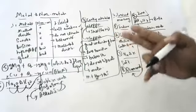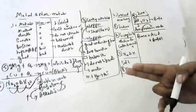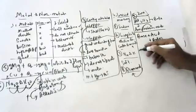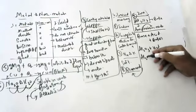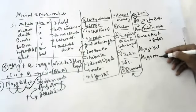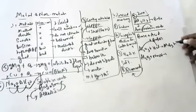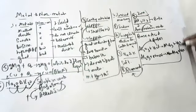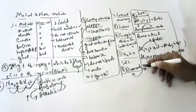Amphoteric oxides react with both acids and bases. For example, aluminum oxide can react with HCl to give aluminum chloride and water, and it can also react with NaOH to give NaAlO2 plus H2O. So Al2O3 reacting with HCl gives AlCl3 + H2O, and Al2O3 reacting with NaOH gives NaAlO2 + H2O.